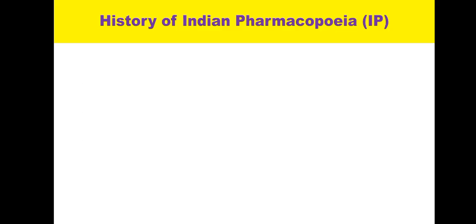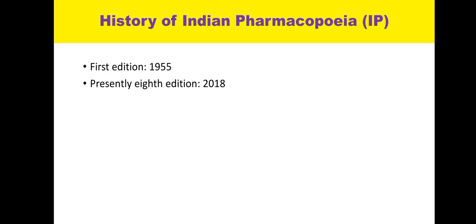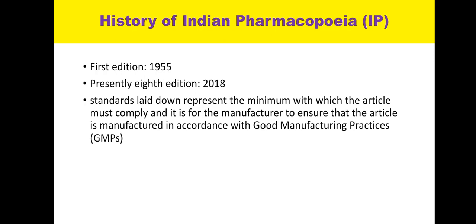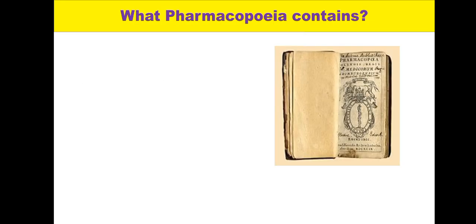Now, something about the history of the Indian Pharmacopoeia. The first edition came in 1955, and presently the eighth edition, dated 2018, is available. The pharmacopoeia lays down certain standards that the manufacturer has to follow while preparing the drug and for approval by the regulatory body. It must be manufactured in accordance with good manufacturing practices. Here is a picture of a very ancient pharmacopoeia.